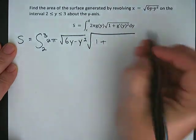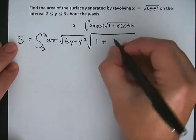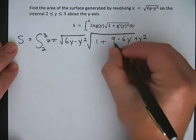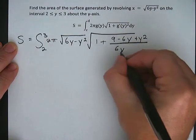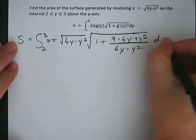Now this square root comes from the formula. 1 plus, and we've already done the g prime of y squared, which ended up being 9 minus 6y plus y squared all over 6y minus y squared. Okay, and this is all with respect to y, so dy.